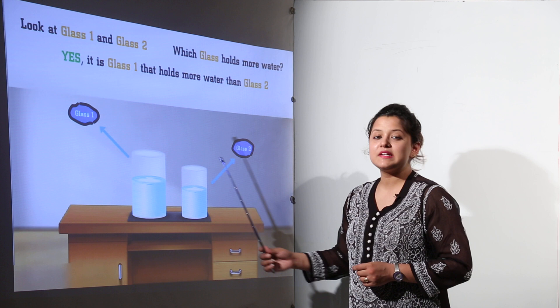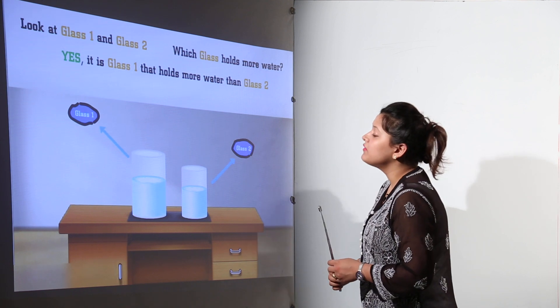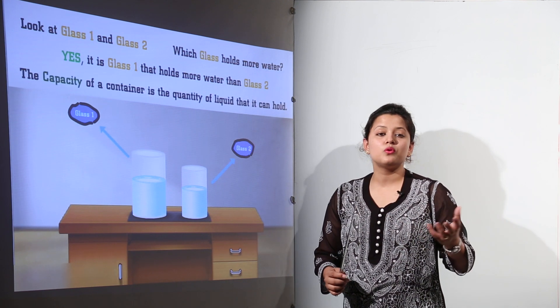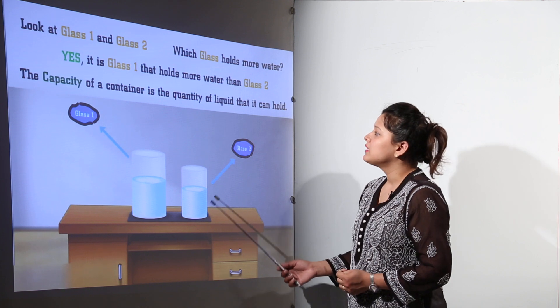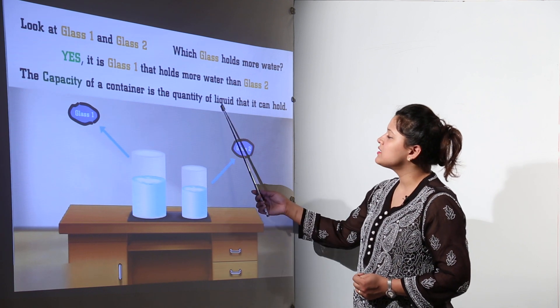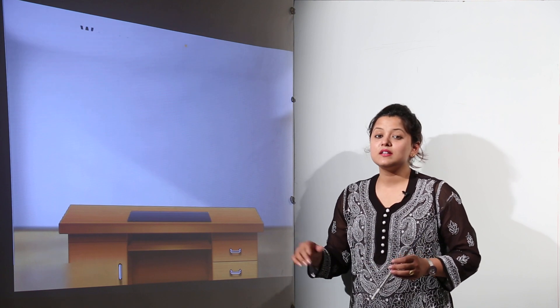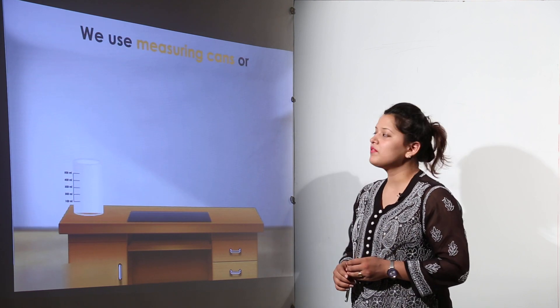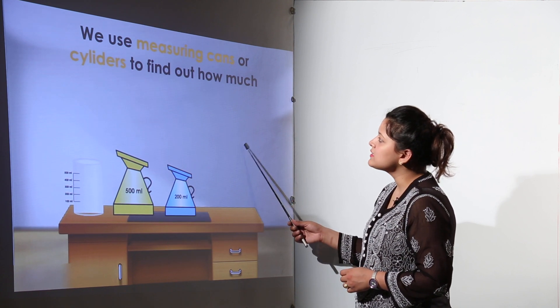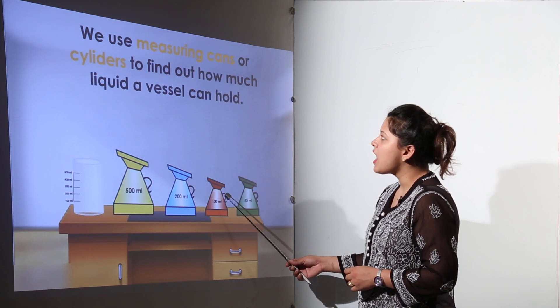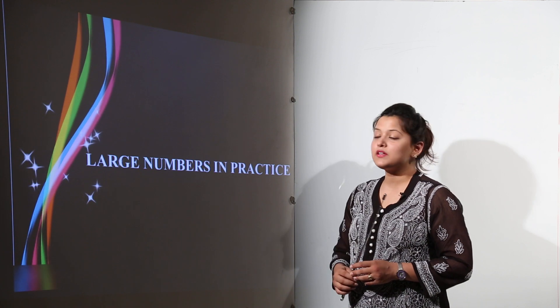So how did you identify it? That identification is done by the water holding capacity. The capacity of the container is the quantity of liquid that it can hold. The container that can hold more liquid will have the more capacity. We use measuring cans or cylinders to find how much liquid a vessel can hold.